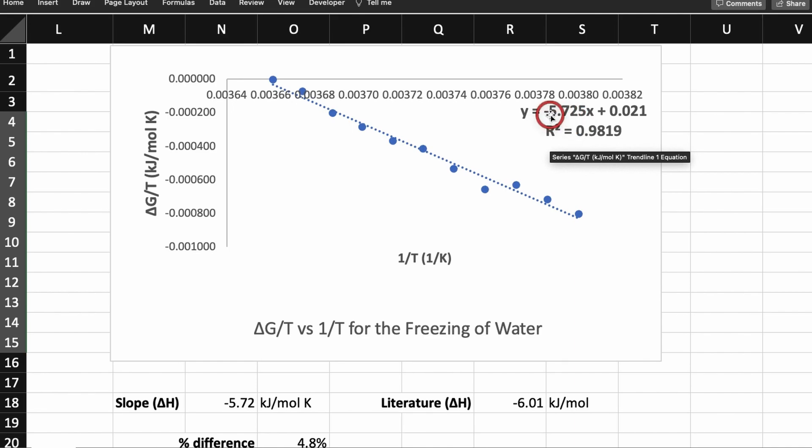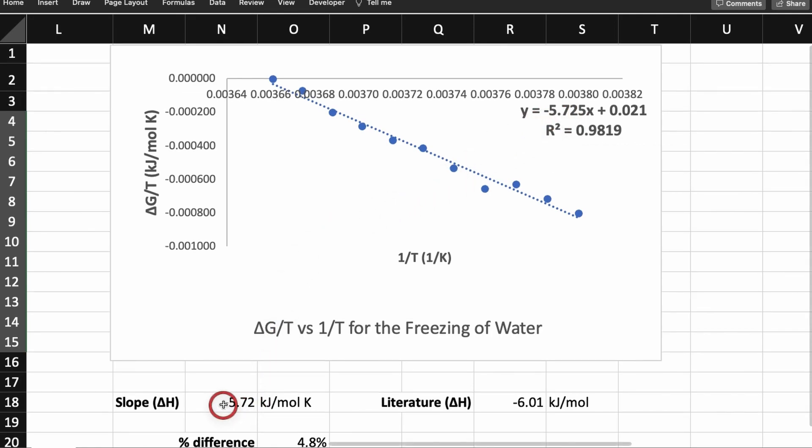The slope is negative 5.725. So this is our delta H, which I wrote down here. So this is delta H, negative 5.72 kilojoules per mole, which is our enthalpy change for the freezing of water.